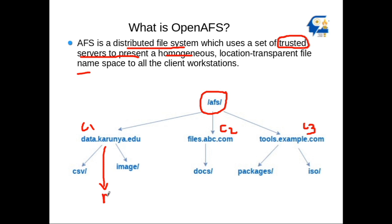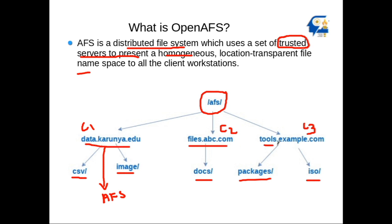Each site is independent of each other — C1 is independent, C2 is independent, C3 is independent — and each connects to a root namespace. One site hosts CSV files and images, another hosts docs, and another provides packages and ISOs. These come from different domains: for example, carnegie.edu, abc.com, and example.com — three different domains.